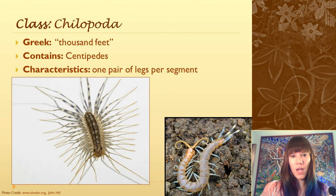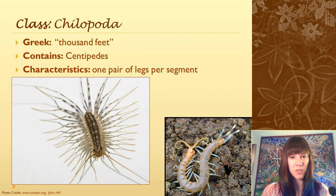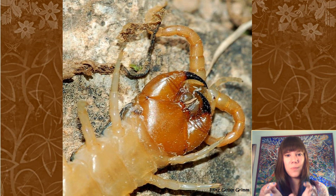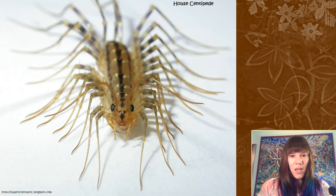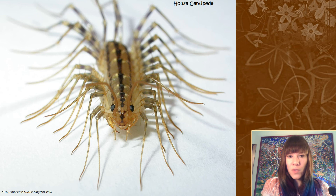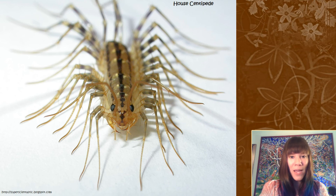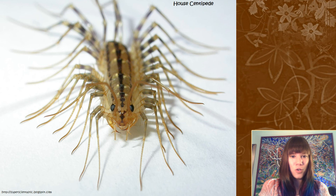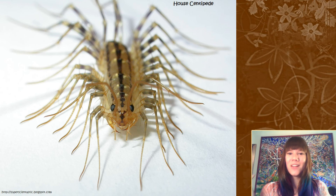The next group is Chilopoda, or the centipedes. Their characteristic is that they have only one pair of legs per segment. Centipedes are generally a lot faster than millipedes because they're predacious, and their first pair of legs has actually moved up and become a modified mouthpart — they inject venom through these hollow modified legs. You'll sometimes hear people talk about the legged wonder they find in their bathtubs — that's just the house centipede. They're really great to have around because they eat cockroaches and spiders and other things you don't want in your house. If you're really afraid of them you can gently put them outside. They actually can't even bite or hurt you.